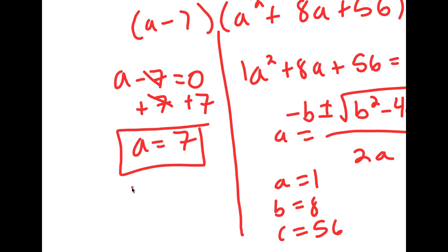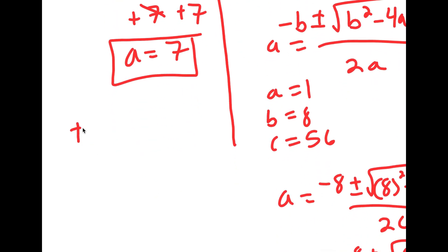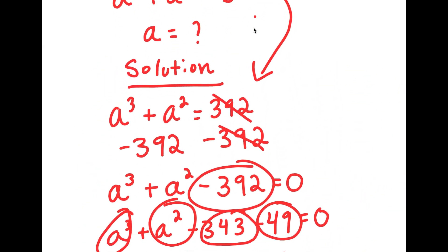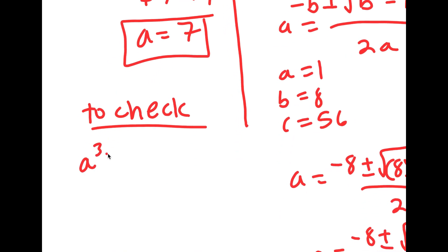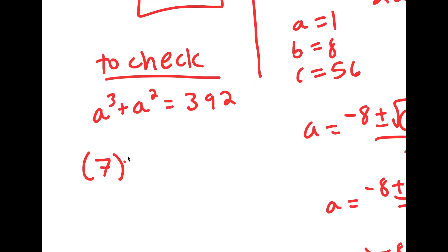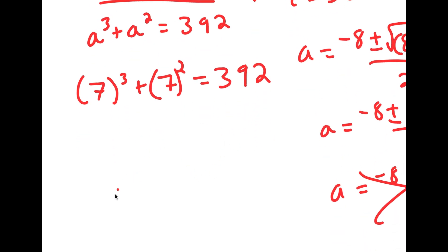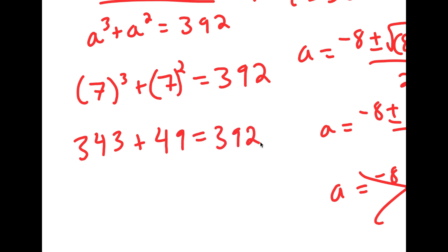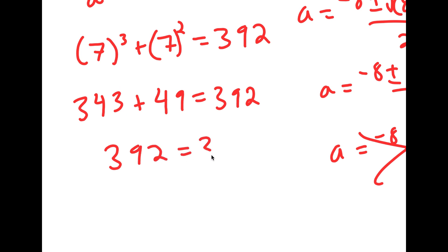So our only solution is a equals 7. Now to check, the original equation was a to the power of 3 plus a squared is equal to 392. With a equals 7, I get 7 to the power of 3 plus 7 squared is equal to 392. Now 7 to the power of 3 is 343, and 7 squared is 49, so 343 plus 49 is equal to 392, meaning 392 equals 392.